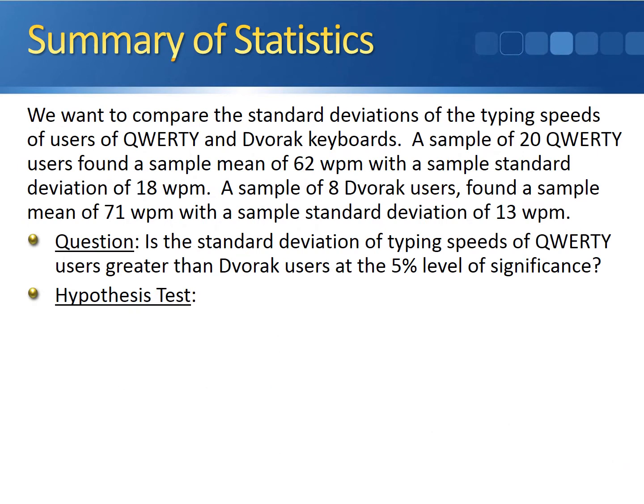Let's set up our hypothesis test. Since the standard deviation of the QWERTY users is larger than the standard deviation of the Dvorak users, it will make our test a little easier to denote the QWERTY users as population one and the Dvorak users as population two. This will keep our test statistic greater than one, which is a nice property to have when working with the F-distribution.